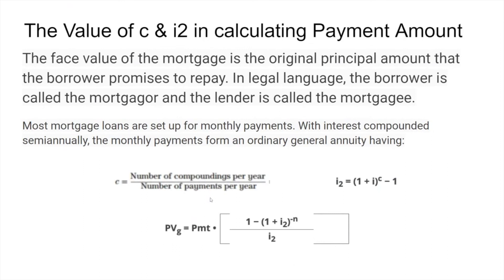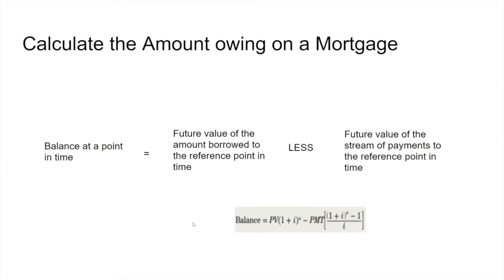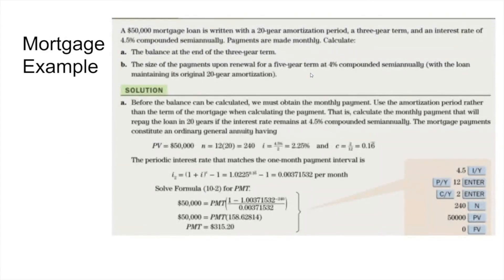That I2 value then gets used to calculate as we've done with the retrospective method. A mortgage is no different than any other loan, except that it's a general annuity, and we have to revise the interest rate to a periodic interest rate using that formula. The balance at any point in time is the future value of the amount borrowed at the reference point in time, less the future value of the stream of payments to that reference point — exactly what we've done for the retrospective method.